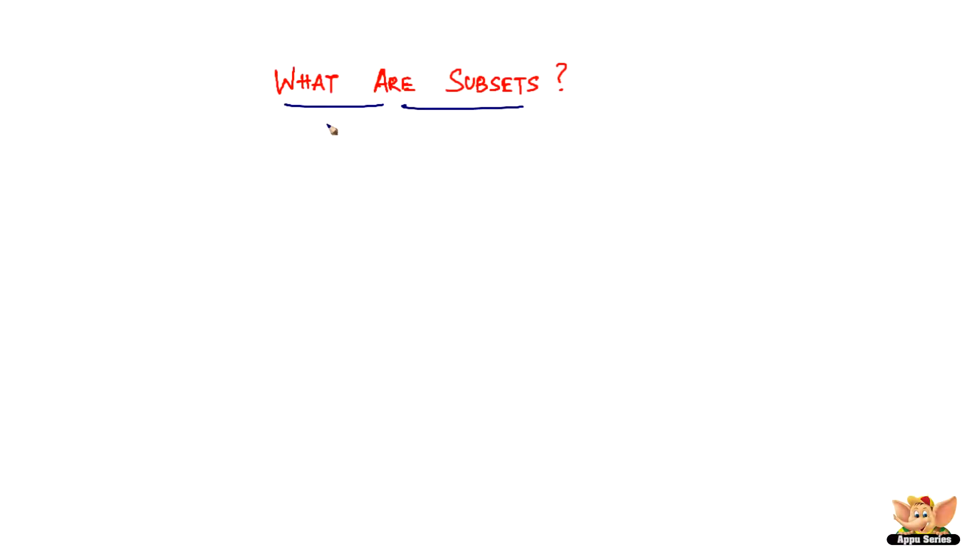In this video let's look into what are subsets. Here we've got a simple explanation which says let A and B be two sets. If every element of A is an element of B, then A is called a subset of B and it is written like this: A is a subset, you write a kind of elongated C like this with a bar below that and write B. This reads A is a subset of B.